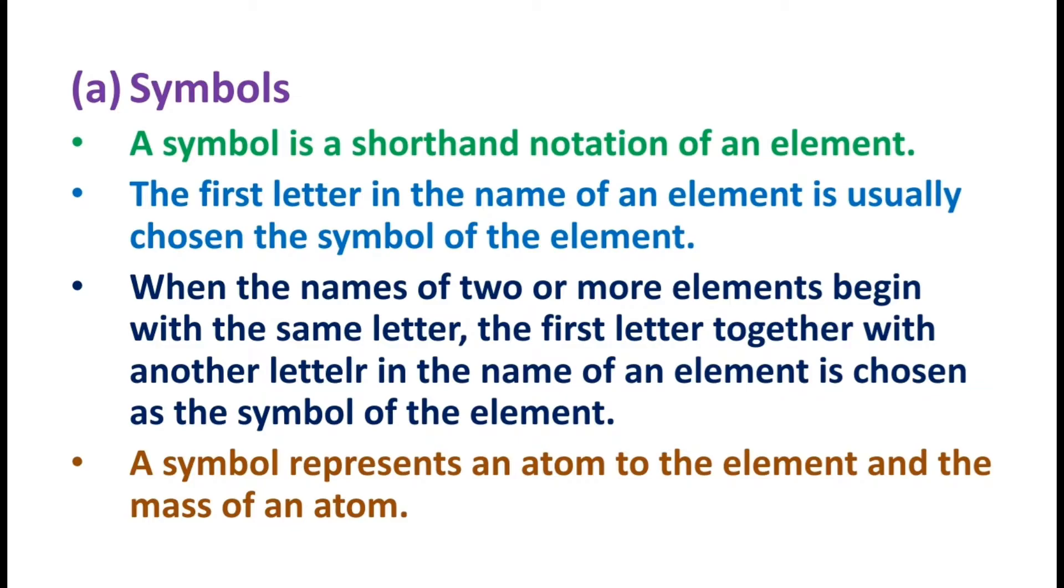The first letter in the name of an element is usually chosen as the symbol of the element. When the names of two or more elements begin with the same letter, the first letter together with another letter in the name of an element is chosen as the symbol of the element.